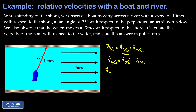First, the velocity of the boat with respect to the shore. The y-component is the adjacent side of the right triangle formed, so we use the cosine function: 10 cos(25°). The x-component is the opposite side, so we use the sine function: 10 sin(25°).